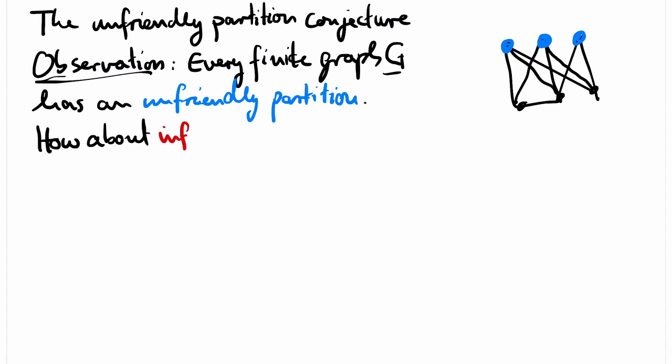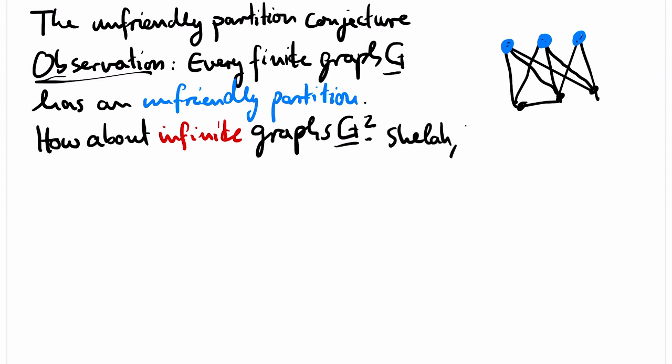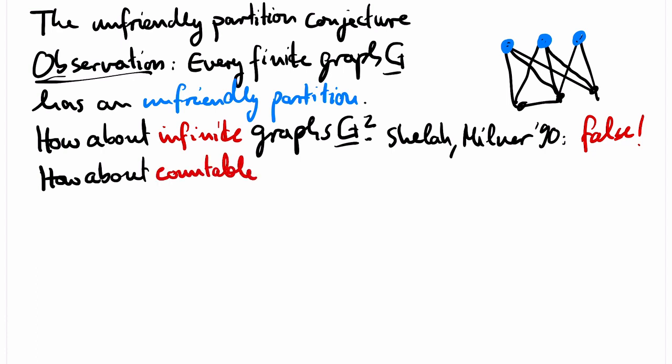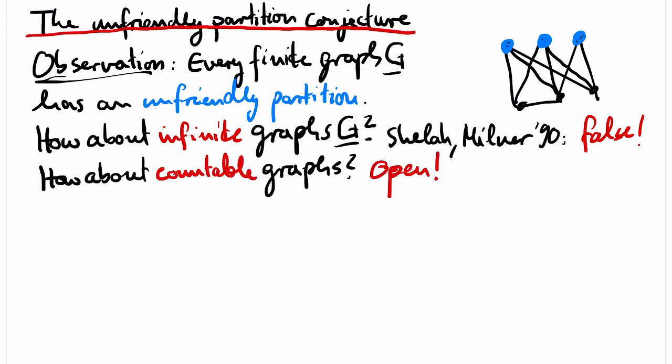Now let's have a look at arbitrary graphs. We already know every finite subgraph has an unfriendly partition, so we are tempted to conclude that G has an unfriendly partition — but this is false. Shelah and Milner constructed a graph with uncountably many vertices without an unfriendly partition. The same question for countable graphs is open, and this is the unfriendly partition conjecture.